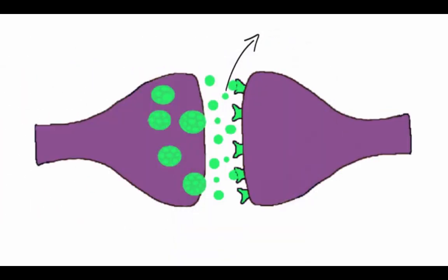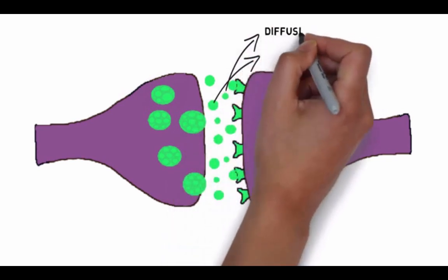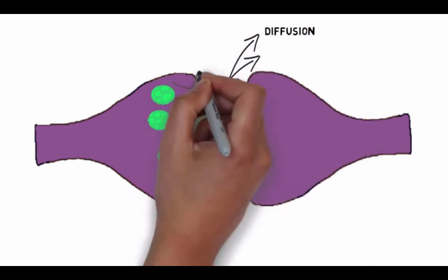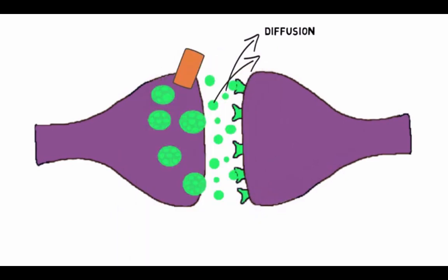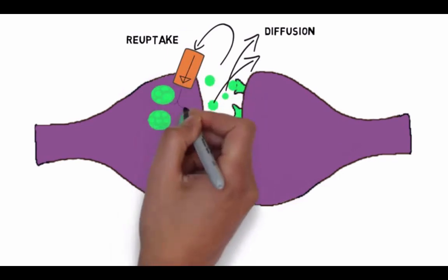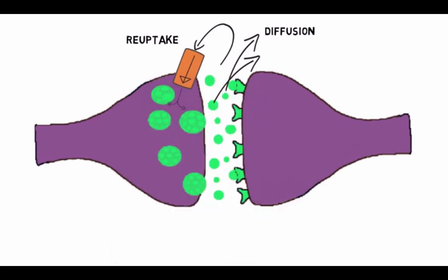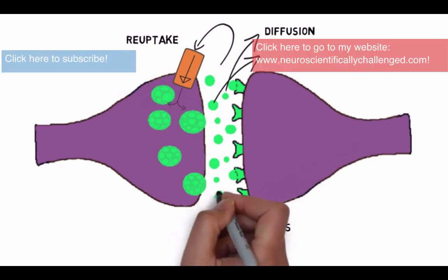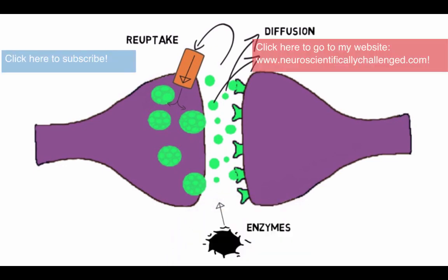Eventually, the neurotransmitter molecules must be cleared from the synaptic cleft. Some of them will simply drift away in a process called diffusion. In some cases, the neurotransmitter is taken back up into the presynaptic neuron in a process called reuptake. Once back inside the presynaptic neuron, the neurotransmitter can be recycled and reused. In other cases, enzymes break down the neurotransmitter within the synaptic cleft. Then the component parts of the neurotransmitter can be sent back into the presynaptic neuron to make more neurotransmitter.